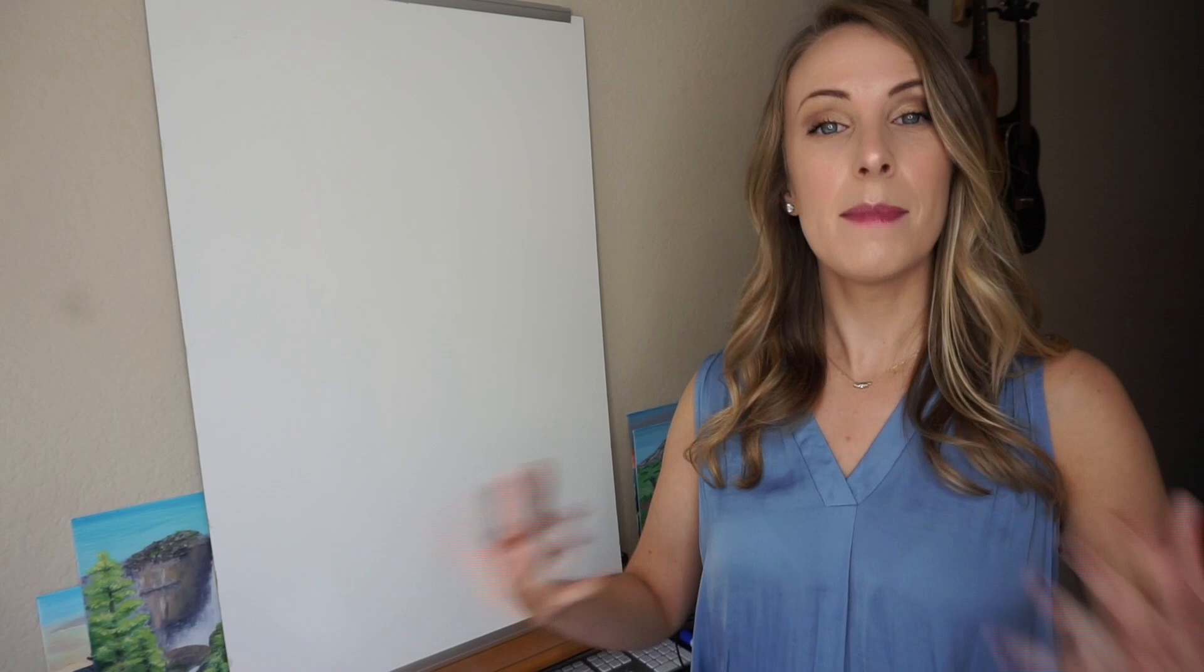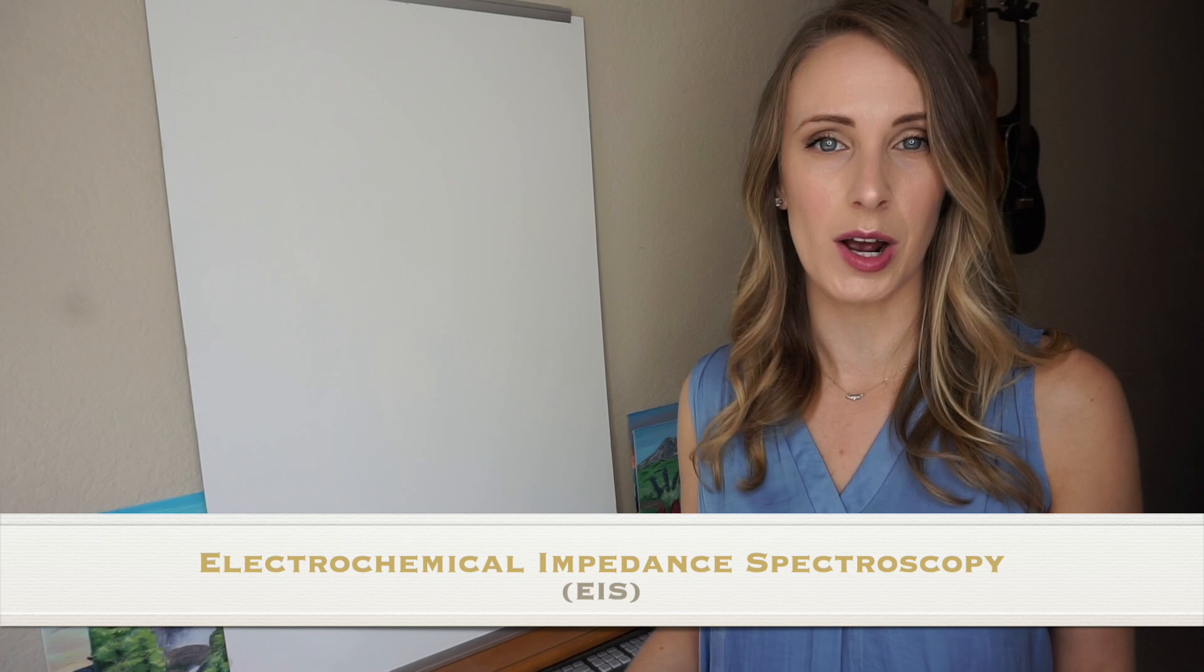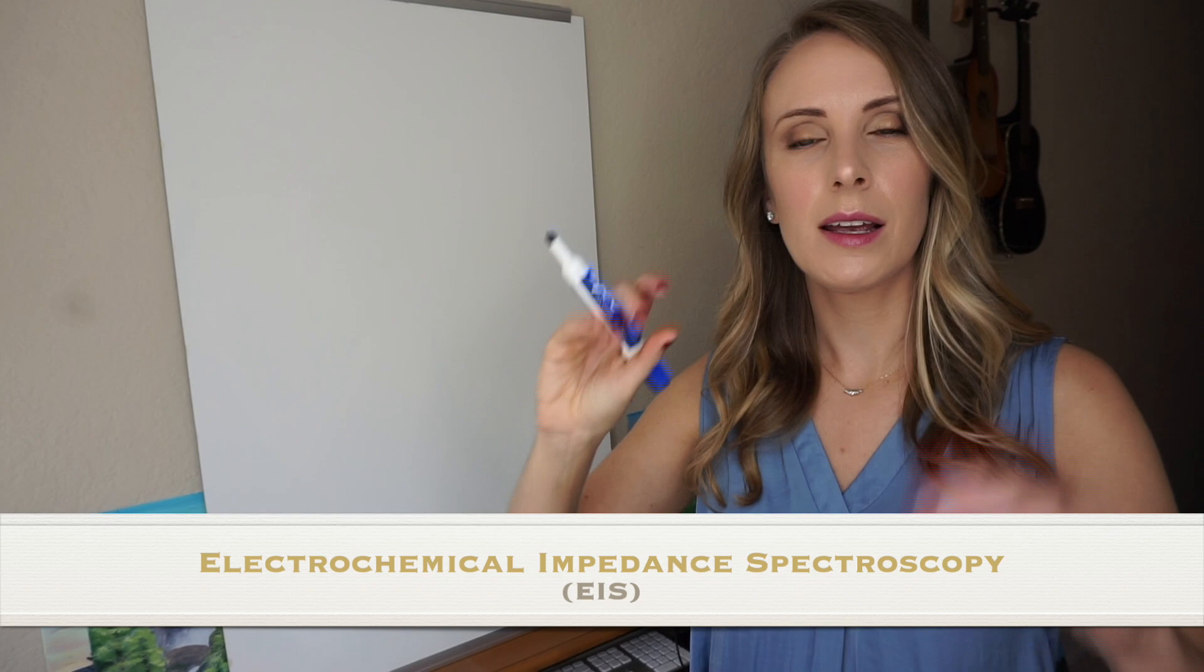Now to measure the impedance of our batteries to understand how their capacity is fading, we want to hook up our batteries to a potentiostat and perform electrochemical impedance spectroscopy, or EIS.